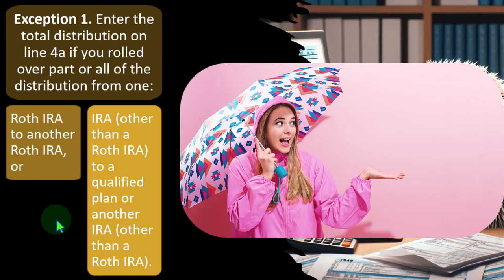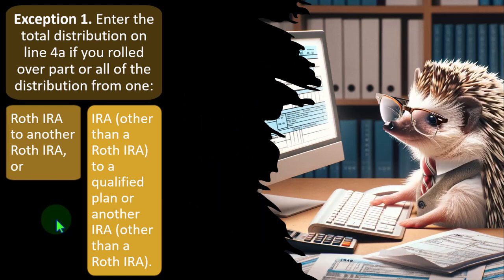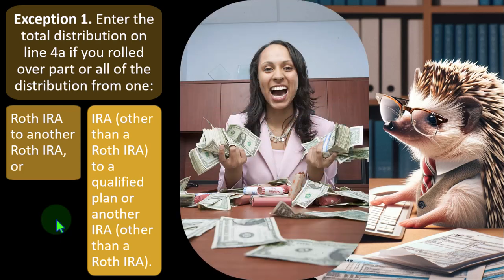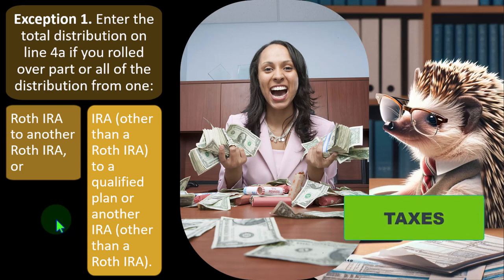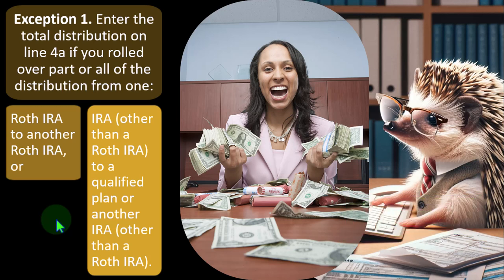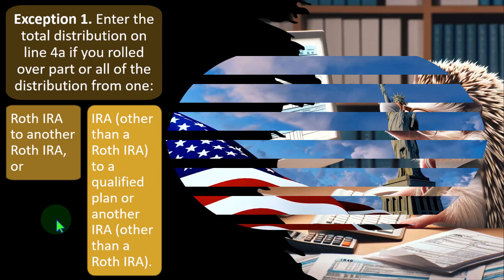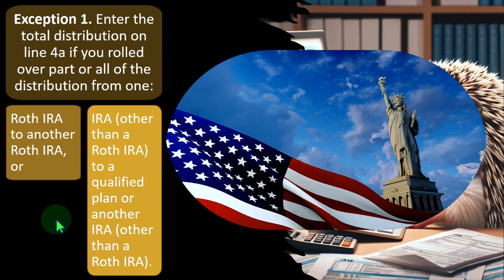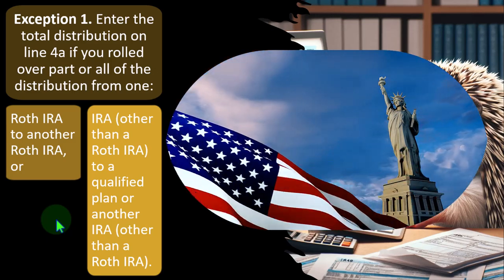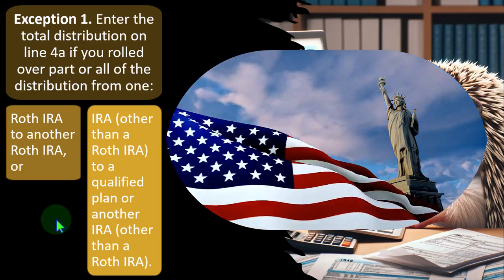The money in these retirement accounts is under an umbrella restricting you from taking it out. But what if you want to move from one institution to another — say you want to move from Vanguard to your bank because you disagree with their investment philosophy? Well, you'd have to take the money out, which would trigger taxes. But if you're not violating the government's intent — you're still saving for retirement, just moving it from one set of funds to another under the IRA umbrella — that's a rollover.